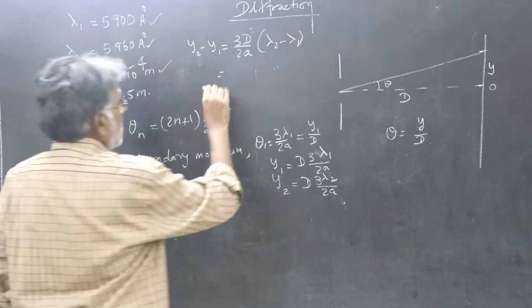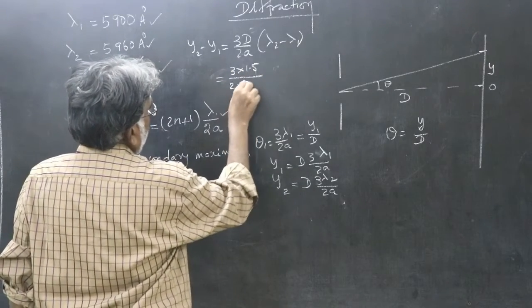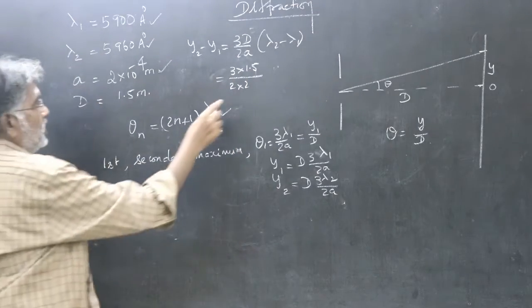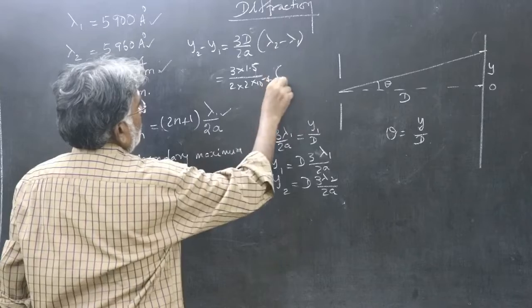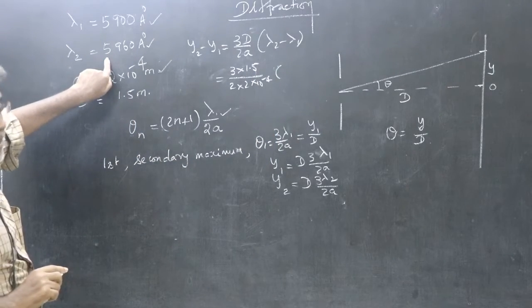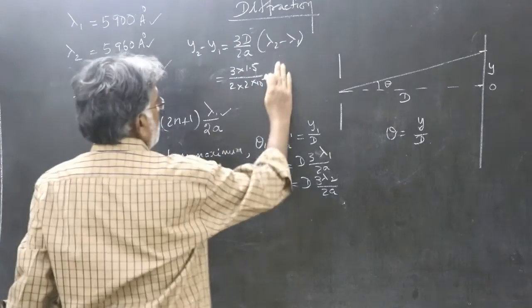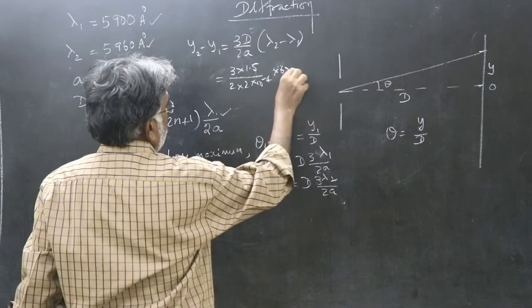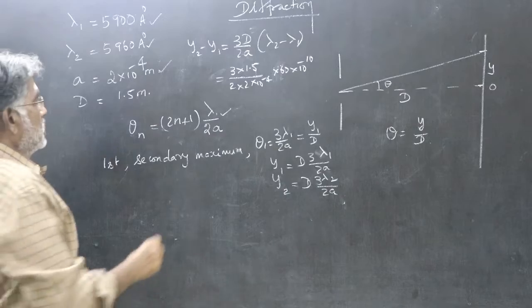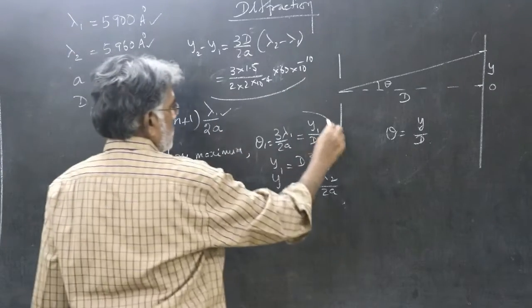Now, you substitute the formula. 3D by 2a is 1.5. So, 3D by 2a is 2 into 10 to the power of minus 4. Lambda 2, 5960. Lambda 1, 5900 in angstrom unit, subtract 60 angstrom unit. So, I straight away write here 60 times 10 to the power of minus 10 meter. After that how do you proceed?